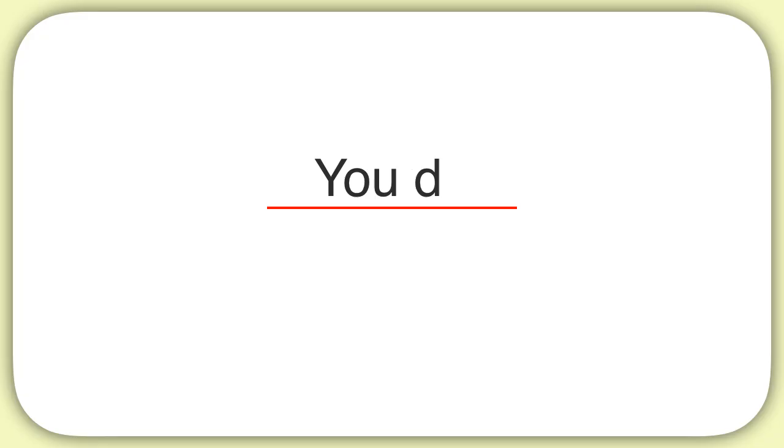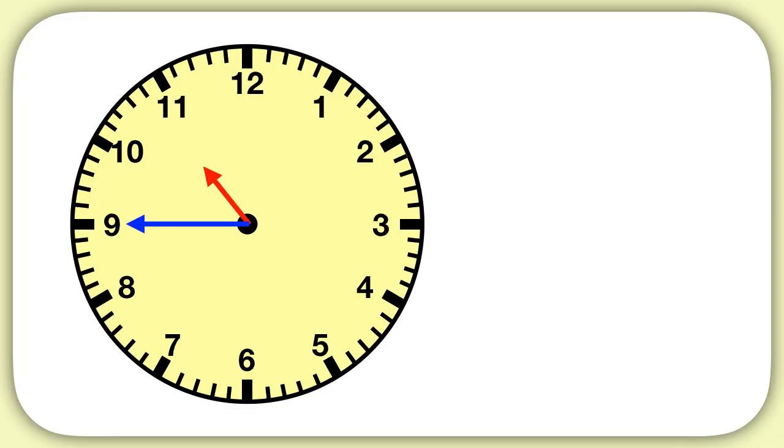Now it's time for you to practice on your own. What time does this clock show? The hour hand points between the 10 and the 11. But because it's not at the 11 yet, we still have 10 hours. We write down 10. Then for minutes, remember that the 9 represents 45 minutes. So our time is 10:45.